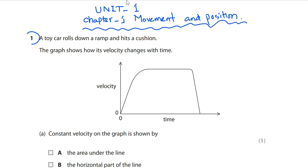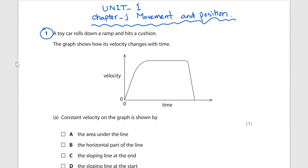Question number one: a toy car rolls down a ramp and hits a wall. The graph shows how its velocity changes with time. It is a velocity-time graph. Part (a): constant velocity on the graph is shown by?